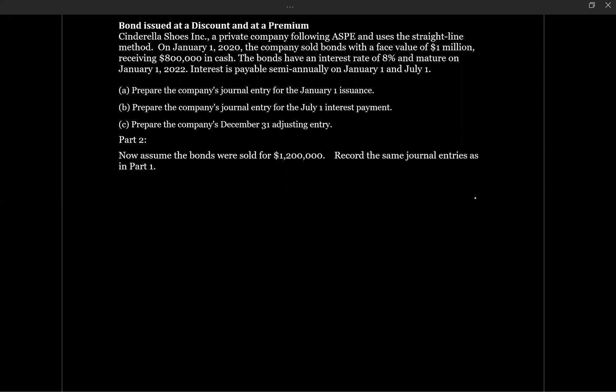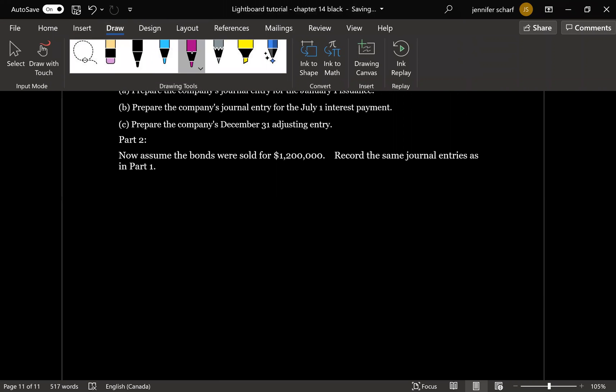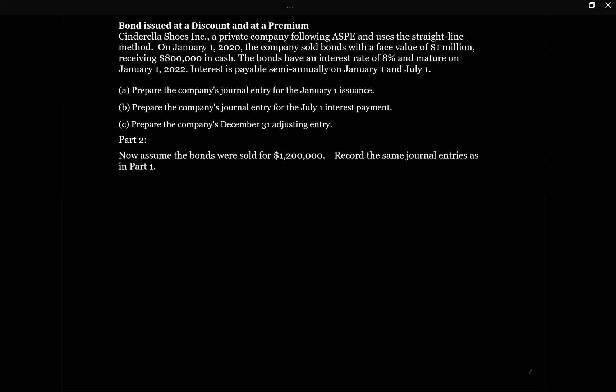Let's take a look at a question with a bond issued at a discount. In this question, Cinderella Shoes Inc., a private company, follows ASPE and uses the straight-line method. On January 1st 2020, the company sold bonds with a face value of $1 million, receiving $800,000 in cash. The bonds have an interest rate of 8% and mature on January 1st 2022. Interest is payable semi-annually on January 1st and July 1st.